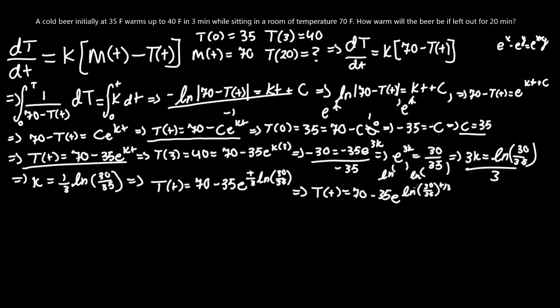T(t) equals 70 minus 35 e to the ln 30/35 to the power of t over 3. Remember, t/3 isn't the power of the ln term. It's actually the power of the internal term, but it's similar syntax. Anyways, now we can cancel this out. So, that gives us T(t) equals 70 minus 35 times (30/35) to the power of t/3.